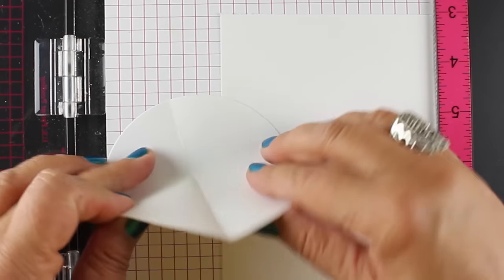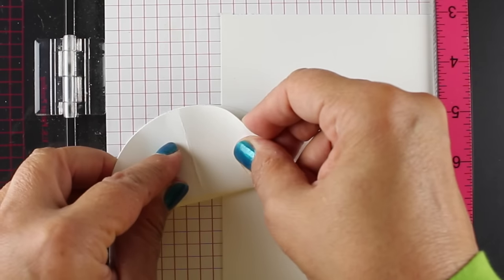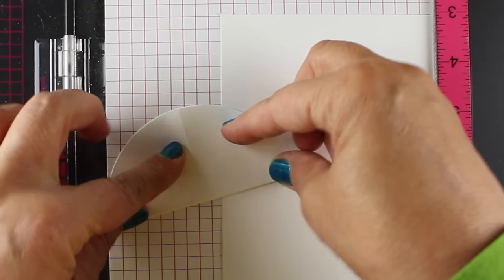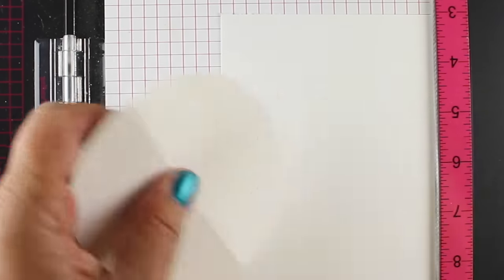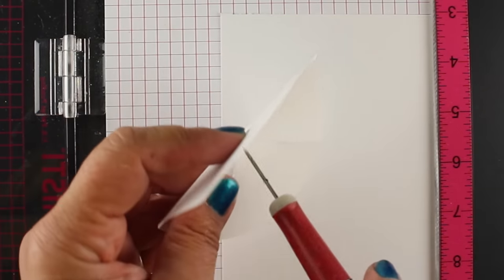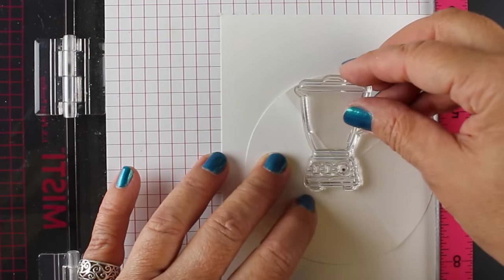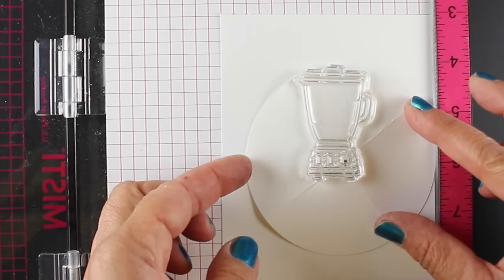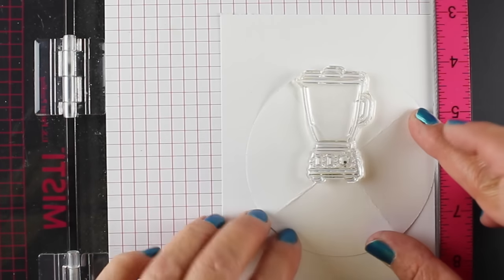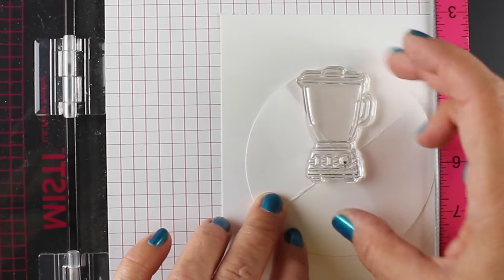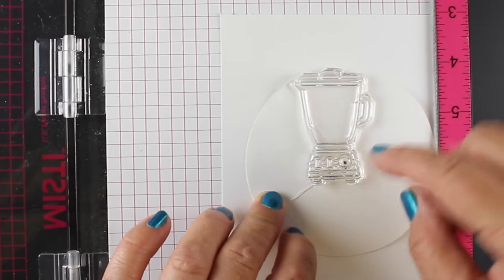But I'm going to start with the construction of this. In order to place my blender in the spot I want it exactly, I've got a circle that I've die cut, and the circle is big enough to contain the entire image. You can see here that the whole top part of the blender, which is going to be the opening, fits right in there with the button right in the center of the circle.